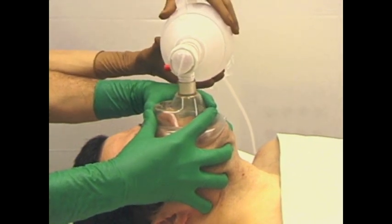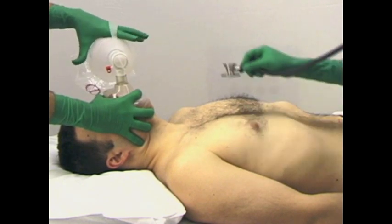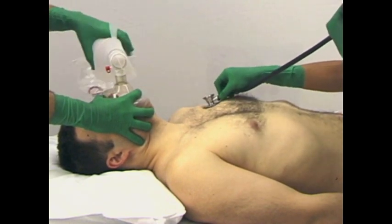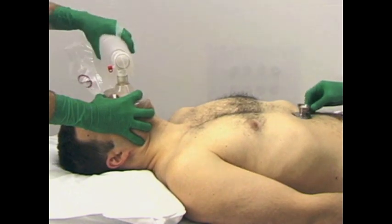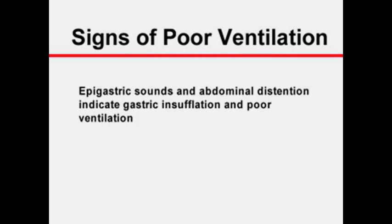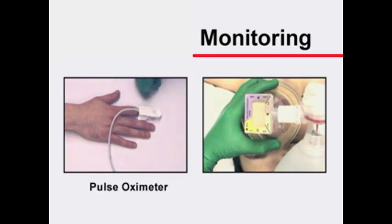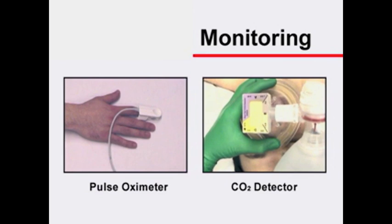Regardless of the technique used to ventilate the patient with a face mask, adequate ventilation can be assessed by inspecting and auscultating the chest and abdomen. The chest rising and falling and breath sounds synchronous with the delivered tidal volume suggest adequate ventilation. Gurgling epigastric sounds and tympanic abdominal distension indicate gastric insufflation and poor ventilation. Other monitoring tools such as pulse oximetry and a carbon dioxide detector can be very valuable.